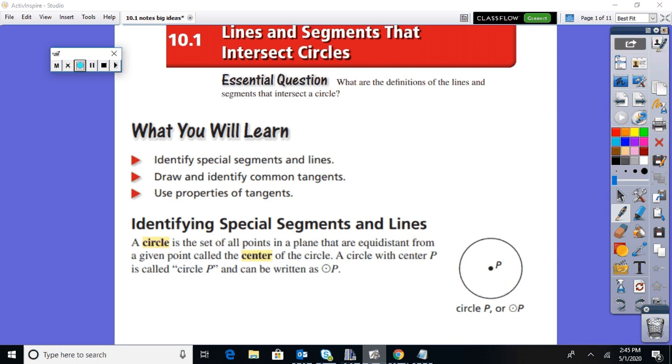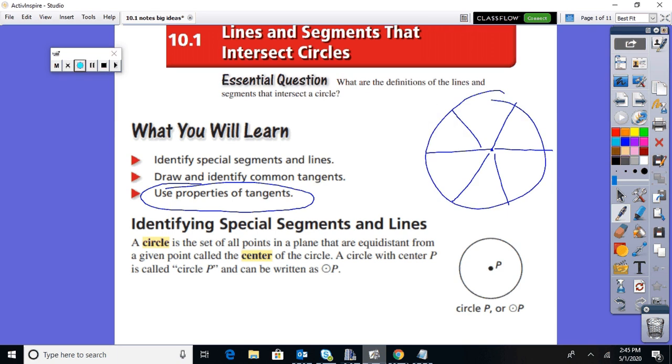We want to be able to recognize some things in this first section: identify special segments, draw and identify common tangents, and of course, here's the big one for your SATs, using the properties of tangents. First off, definition of a circle: set of all points in a plane equidistant from a given point. So pick a point and you measure out the same distance all the way around. When you connect those points, that creates a circle.